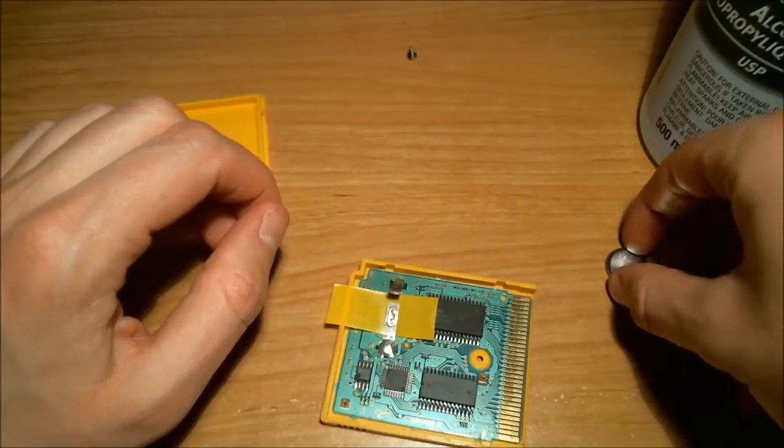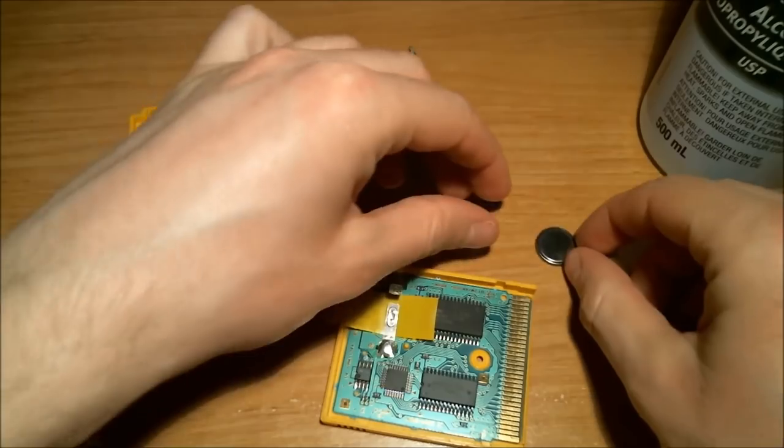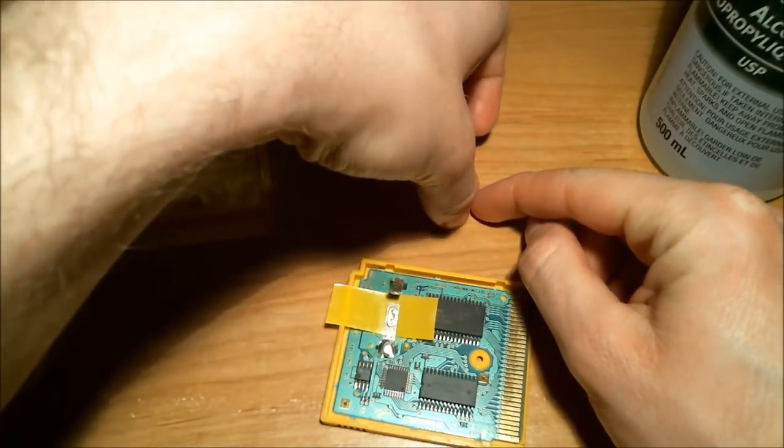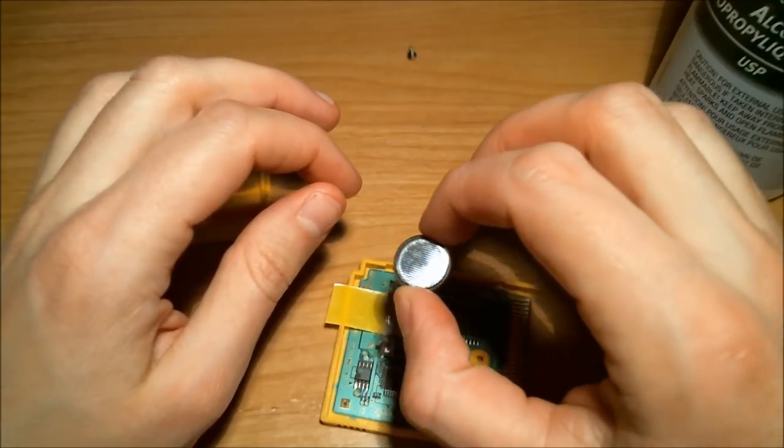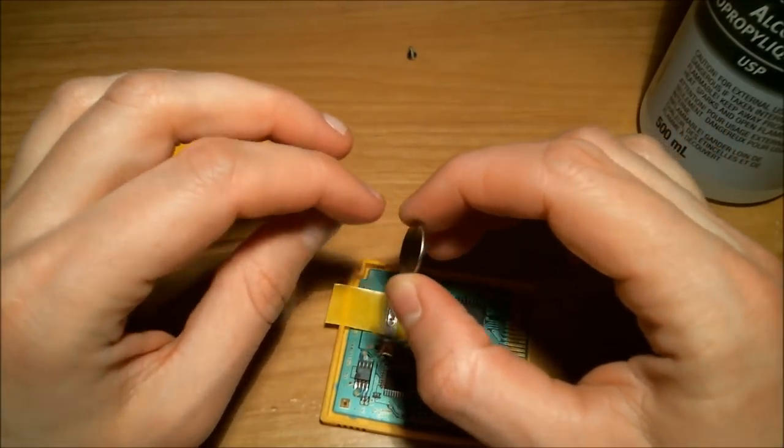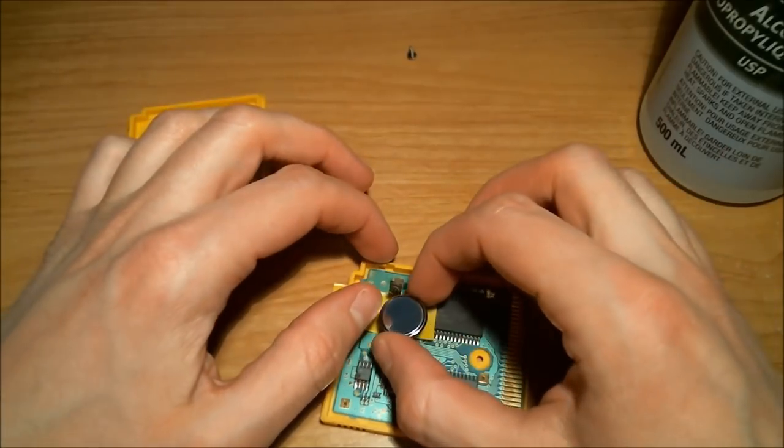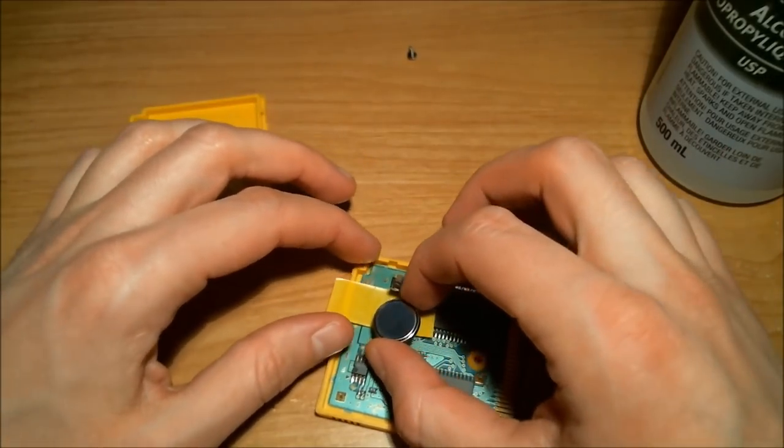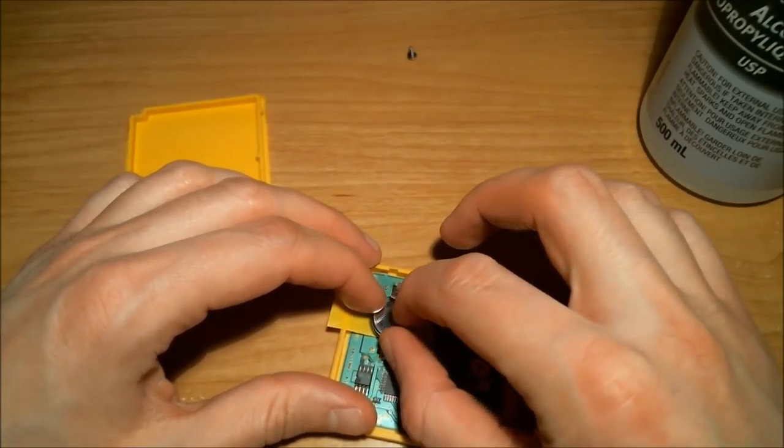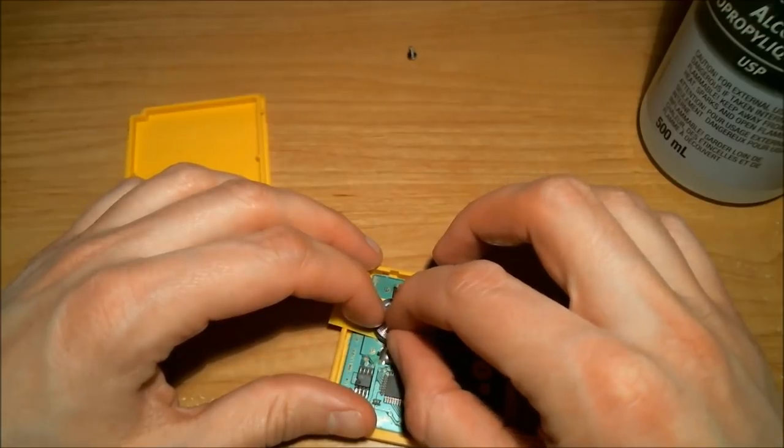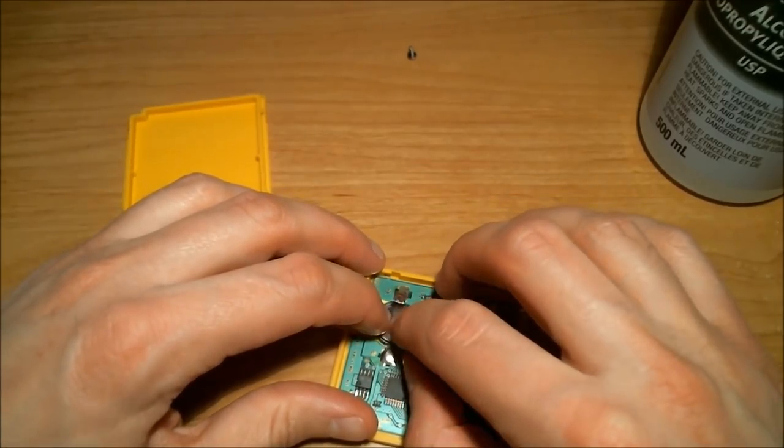And we're going to take our new battery. There we are. And we're going to place it positive side down onto that bottom contact, right where the old battery was. Press it down firmly. Make sure it's sitting on that tab well.